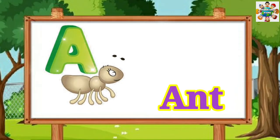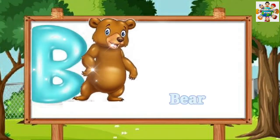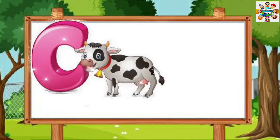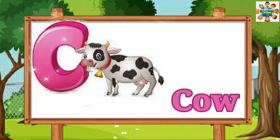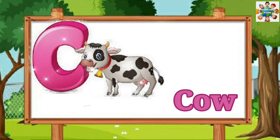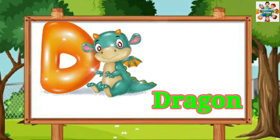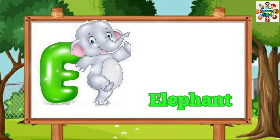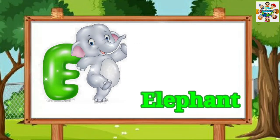A is for Ant. B is for Bear. C is for Cow. D is for Dragon. E is for Elephant.